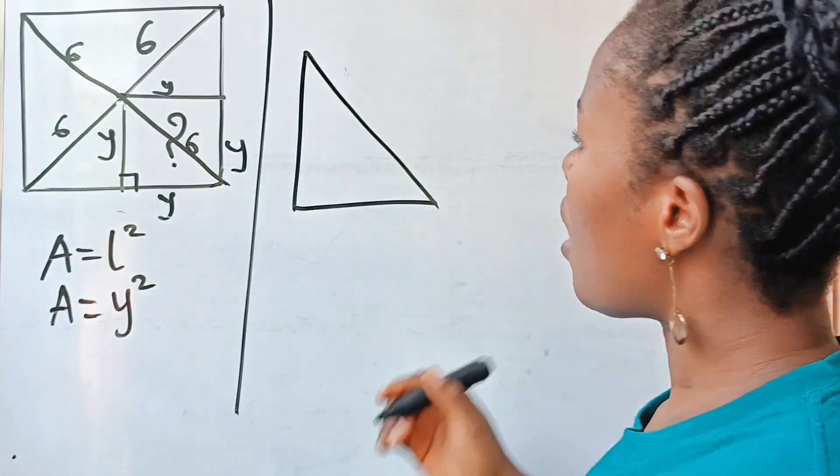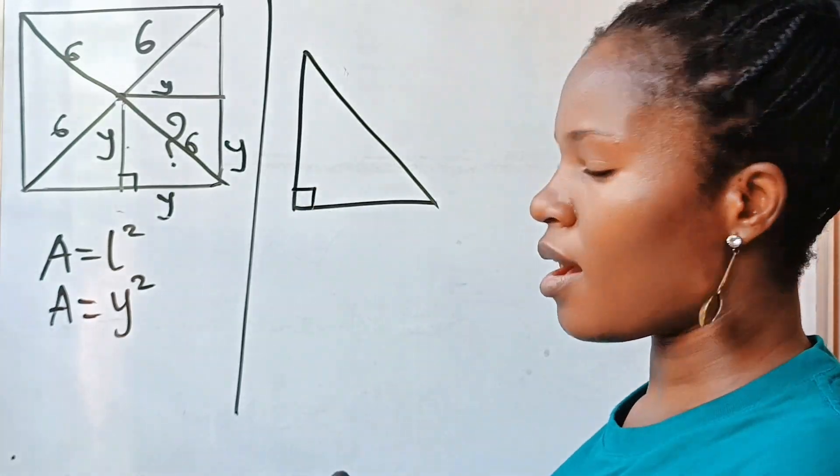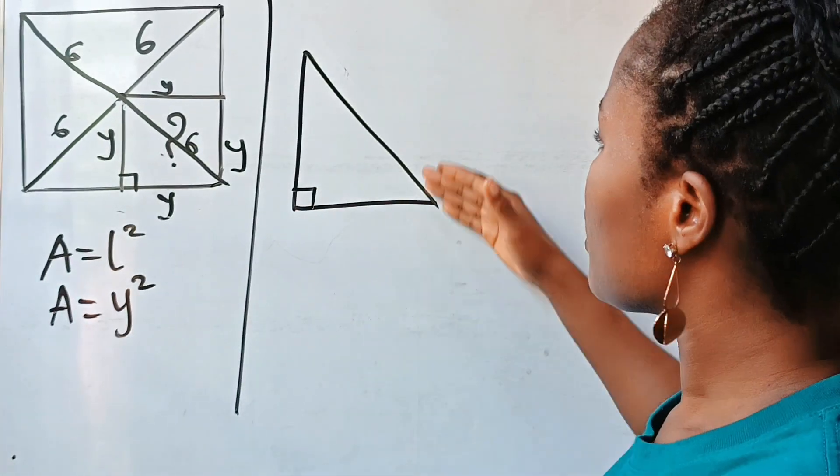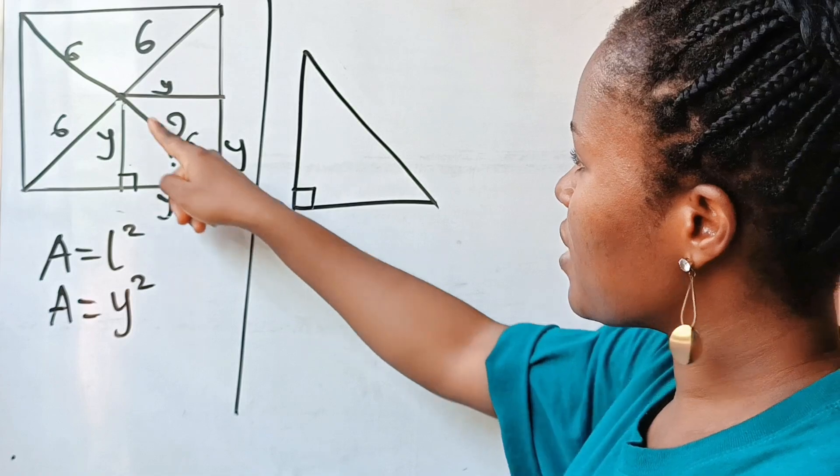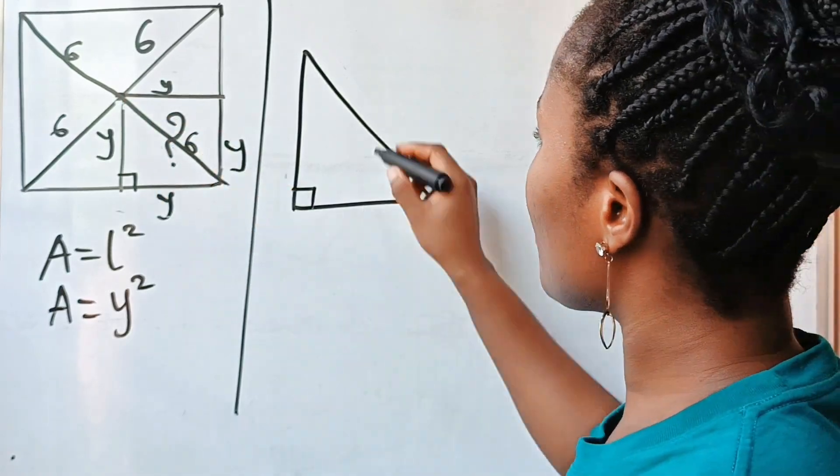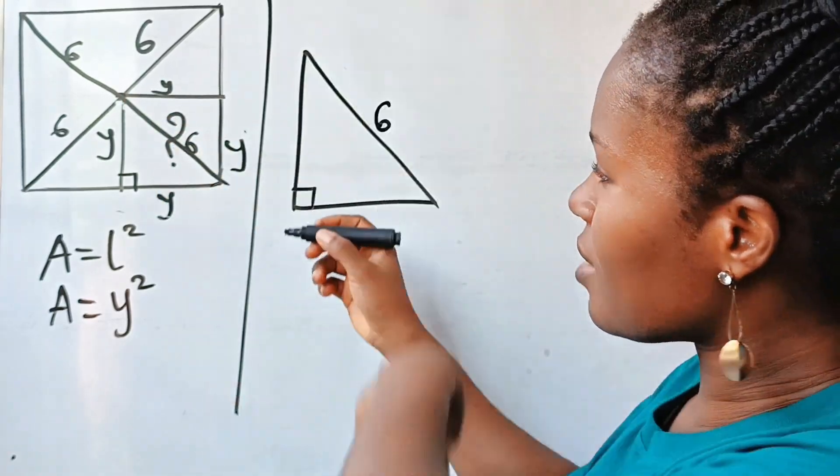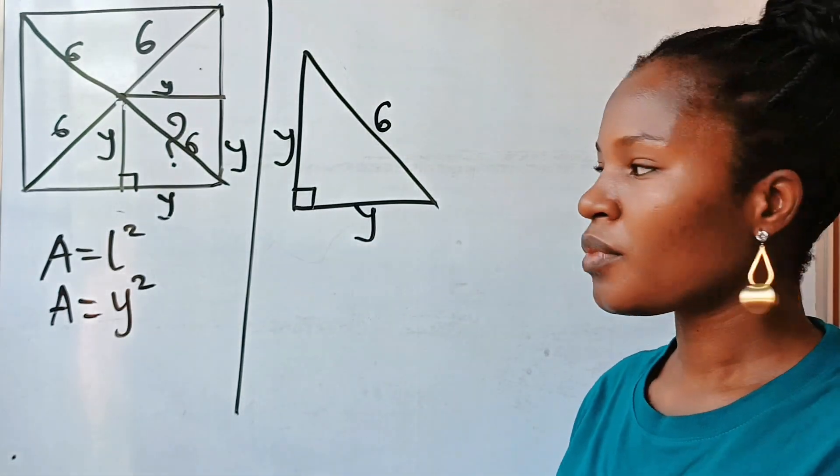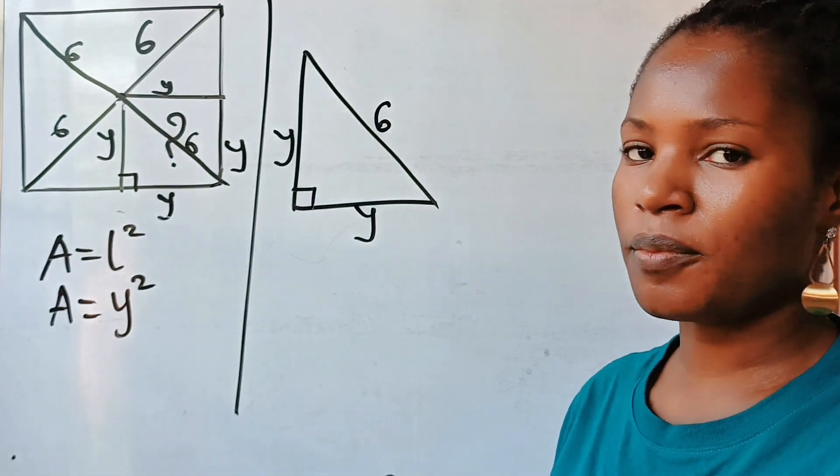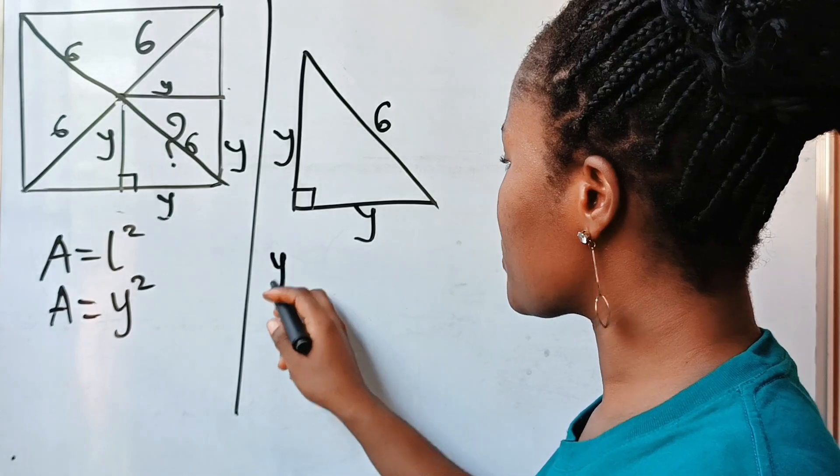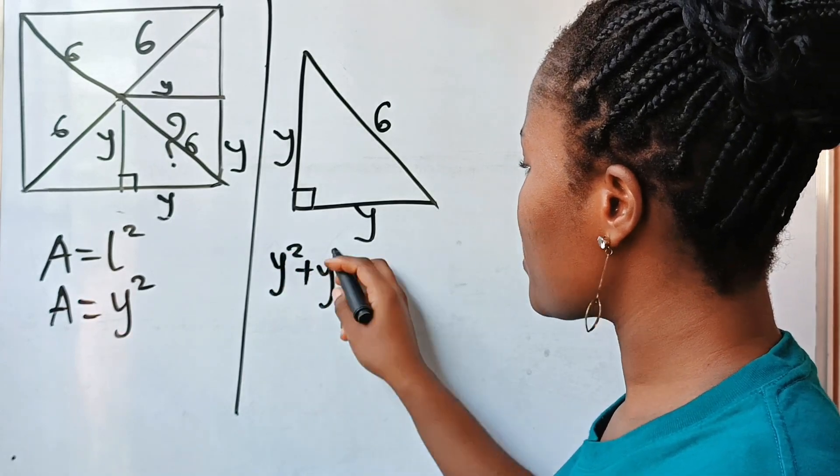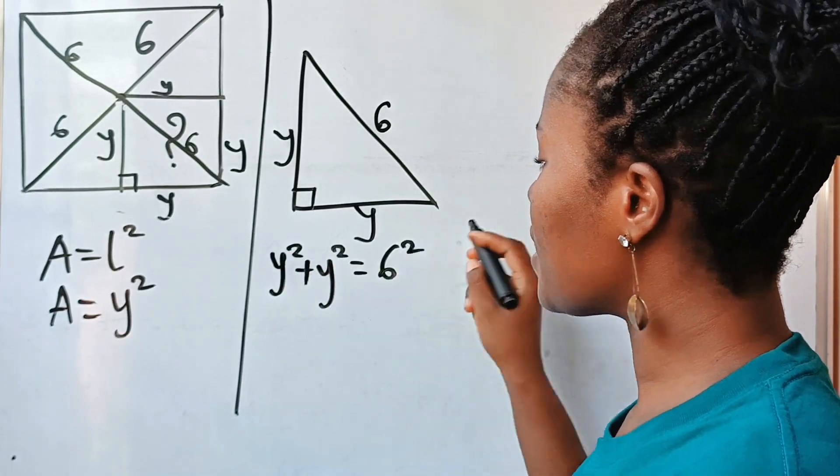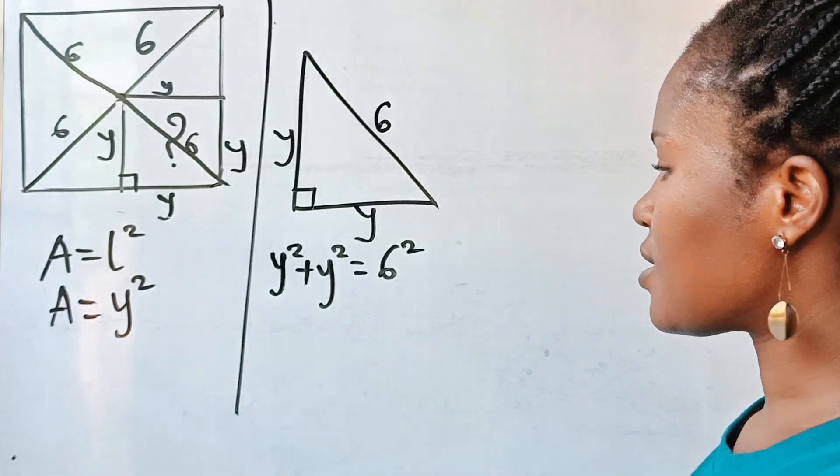All right, now this is our right angle. It simply means that this place, which is equal to six, is our hypotenuse, and then this is y and this is y as well. Now using the Pythagorean theorem it means that y squared plus y squared should give us six squared. Do you understand?